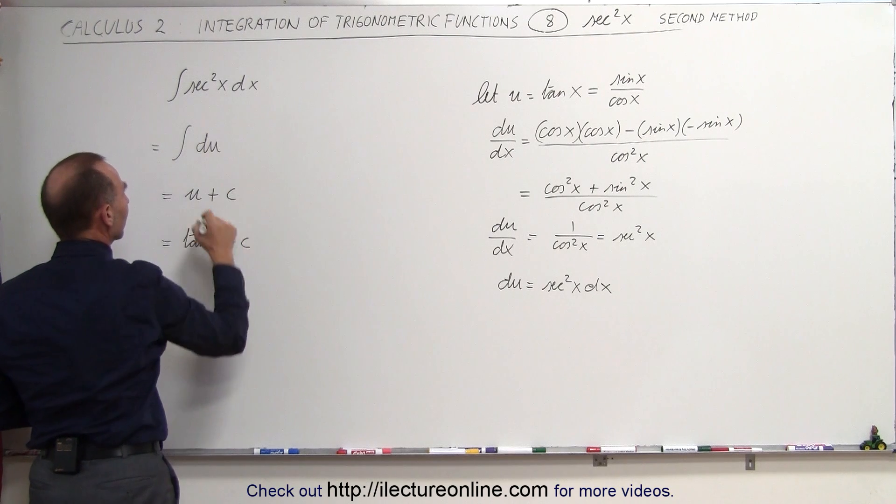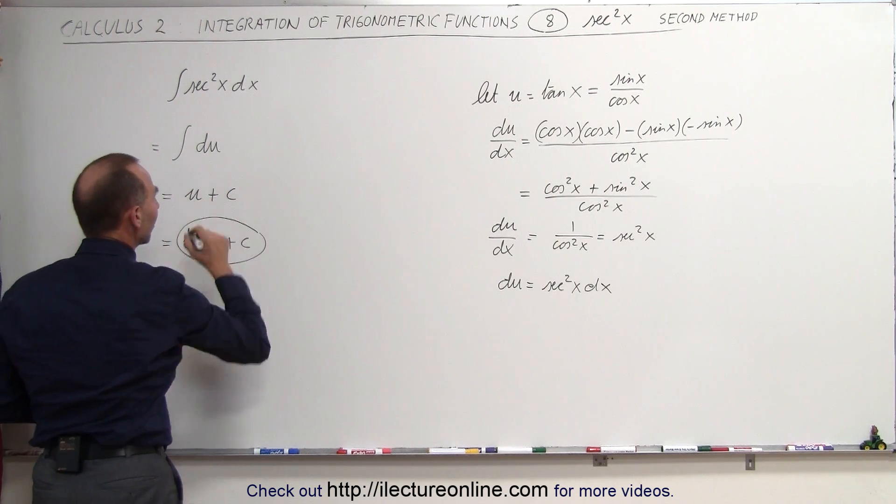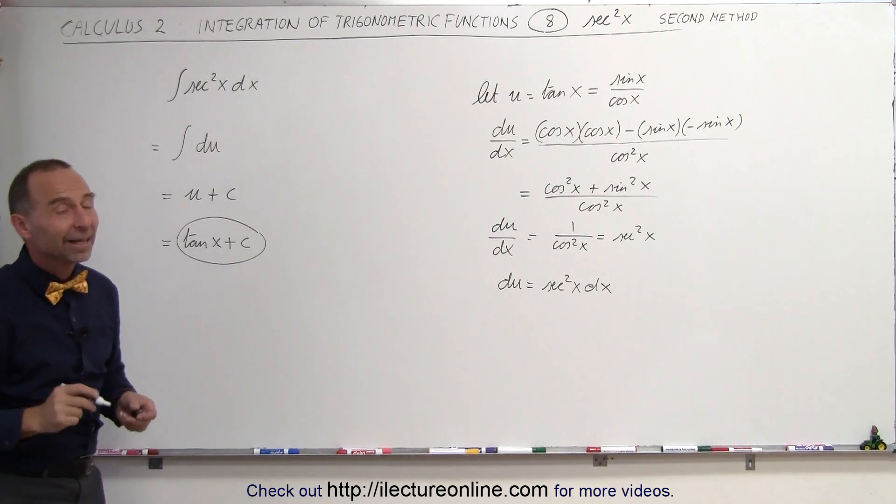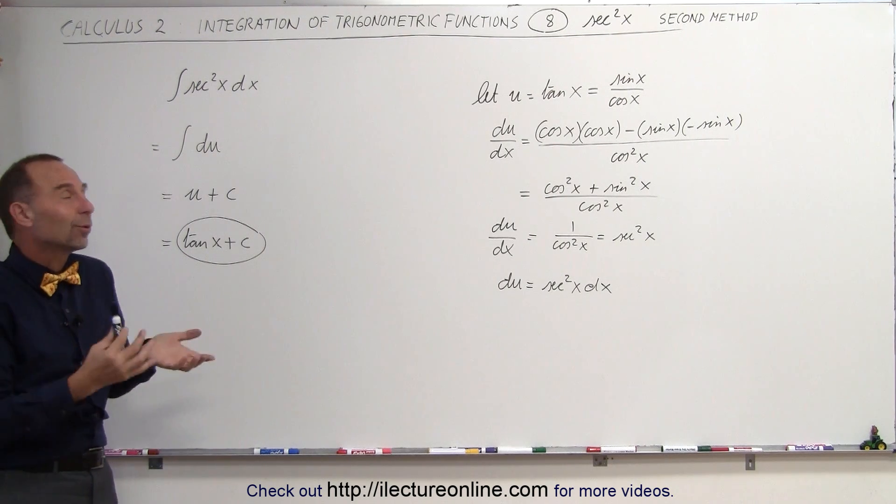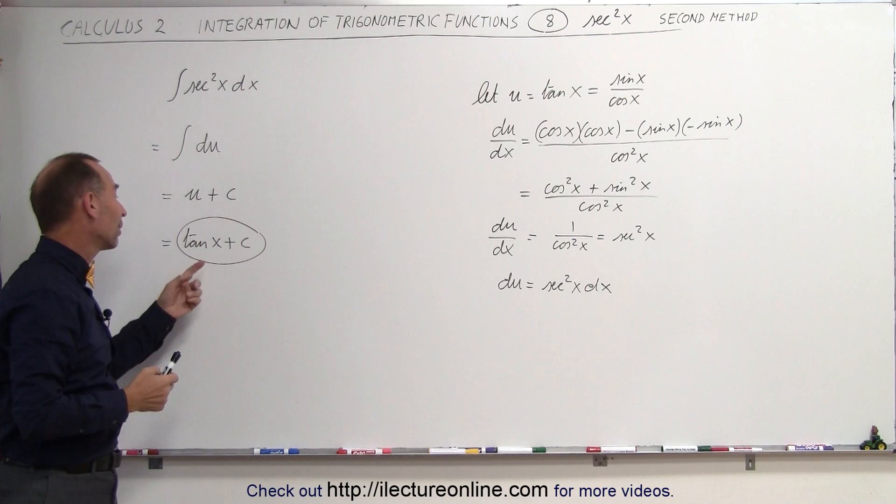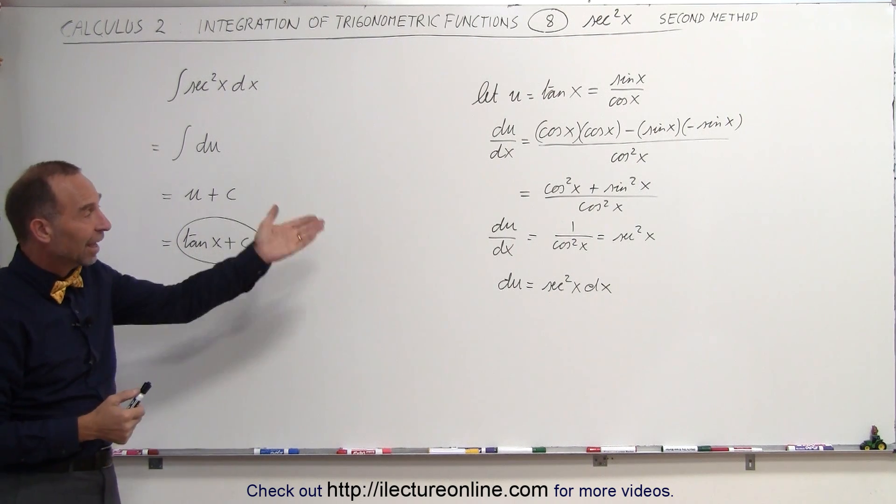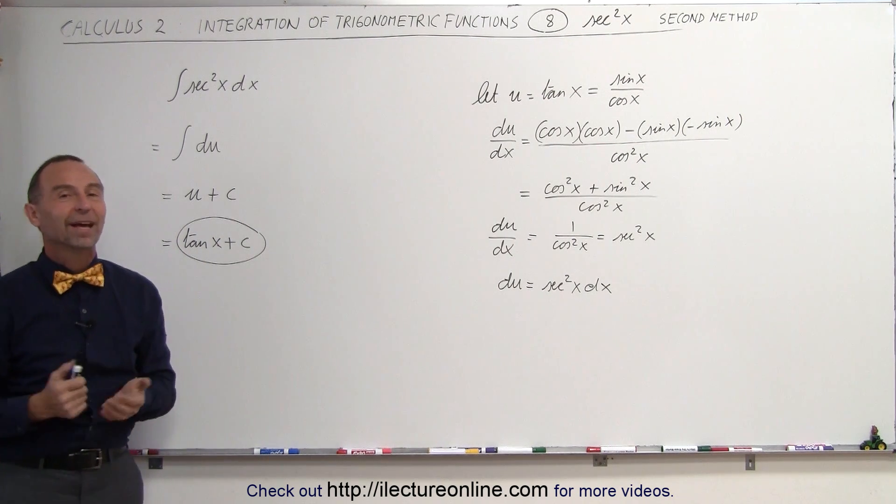The integral of the secant squared of x dx is equal to the tangent of x plus the constant of integration. Again, it does take some prior knowledge of the trick that we need to use, realizing that the integral of the secant squared of x is indeed the tangent of x, and that is what proves it. And that's how we do it.